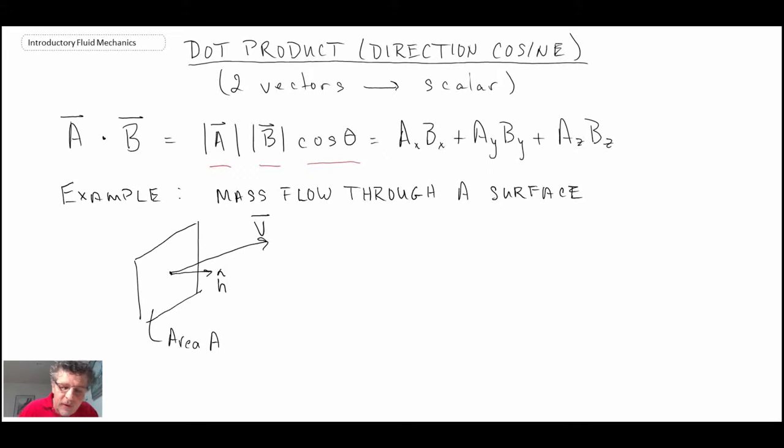And we'll give that the symbol or the sign little n with a hat to denote the fact that it is a vector. But it's a unit vector, so it has magnitude of one.